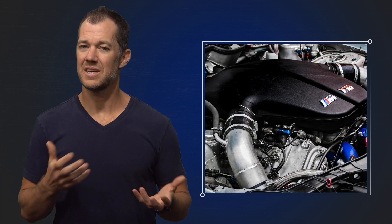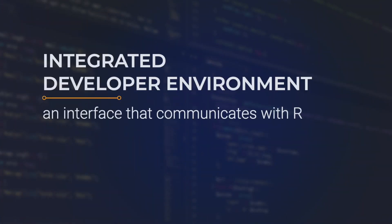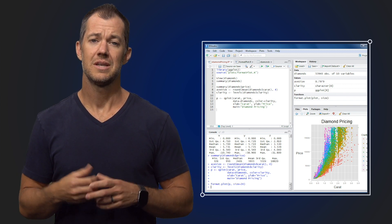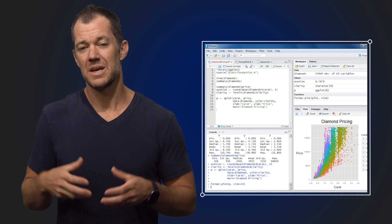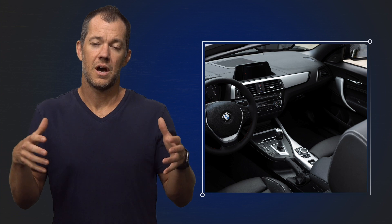However, just like driving a car, you don't drive the car from the engine. Instead, what we have is an integrated developer environment. This is going to be an interface that communicates with the engine — it communicates with R — but has a lot of features that allow us much more ease and flexibility, and importantly, reproducibility in data science. One very popular developer environment for the R programming language is called RStudio. So RStudio is a little bit like driving R from the comfort of the driver's seat.